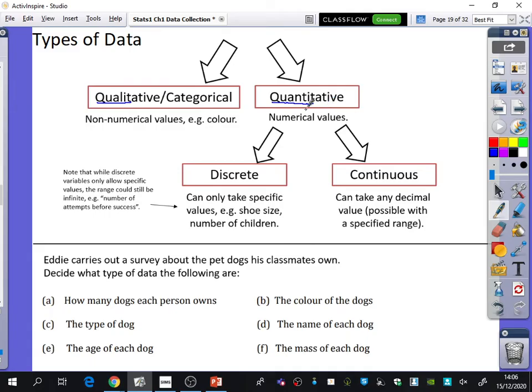Quantitative data, it's very difficult to say with all the T's in there, is numerical values that get split into two different kinds. You have discrete data, and discrete data can only take specific values, like your shoe size or the number of children in a family. Notice I've said shoe size here, not the size of your foot, because shoe sizes you can only buy set sizes. Whereas the size of your foot is actually continuous because it can take any decimal value possible within a specified range. While discrete variables only allow specific values, the range could still be infinite. It could be like the number of attempts before success on something. It doesn't have to be in a set range.